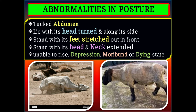Abnormalities of posture include tucked abdomen, lying with the head along its side, standing with feet stretched out in front, standing with head and neck extended, being unable to rise, and depression or even dying states. Through these various postural abnormalities we can identify the affected animal, separate it from the flock, provide treatment, and then decide to further process or delay slaughter.